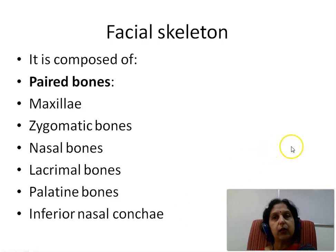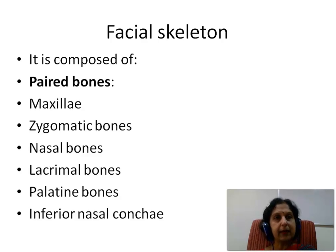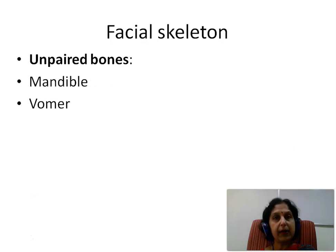We then go on to see the facial skeleton. It is composed of paired and unpaired bones. Paired bones are the maxillae, zygomatic bones, nasal bones, lacrimal bones, palatine bones, and the inferior nasal concha. While the unpaired bones are the mandible and the vomer.